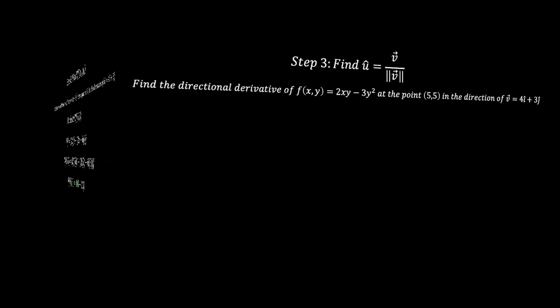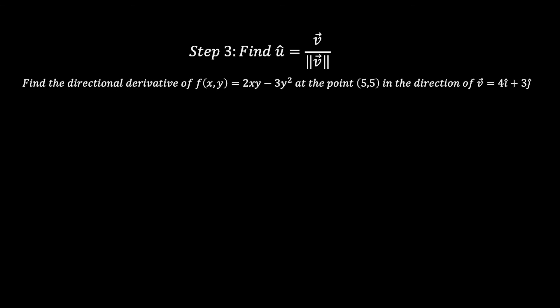Now let's move on to step three. In step three we need to find our unit vector u. We're given a vector and that vector is 4i + 3j. To find the unit vector, we're going to take our given vector and divide it by the norm of that vector. After carrying out these operations, we'll find that our unit vector is equal to (4/5)i + (3/5)j.